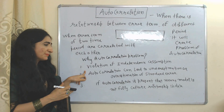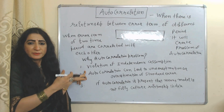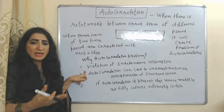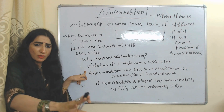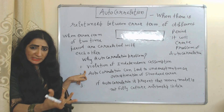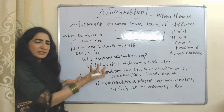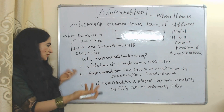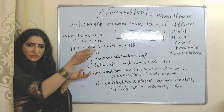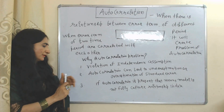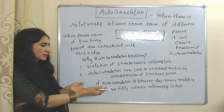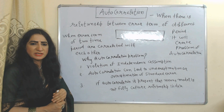How can autocorrelation be a problem? First, it causes a violation of the independence assumption — we use many tests assuming error terms of different periods are not related, but if they are related, this assumption is violated. Additionally, autocorrelation can lead to underestimation or overestimation of standard errors, and it means the model is not fully capturing the relationship in the data.